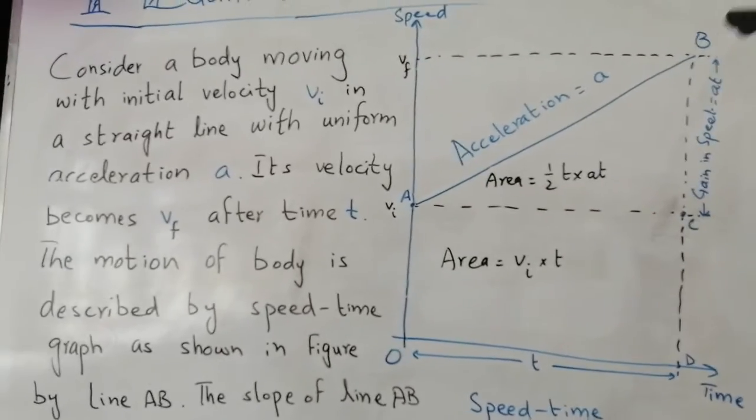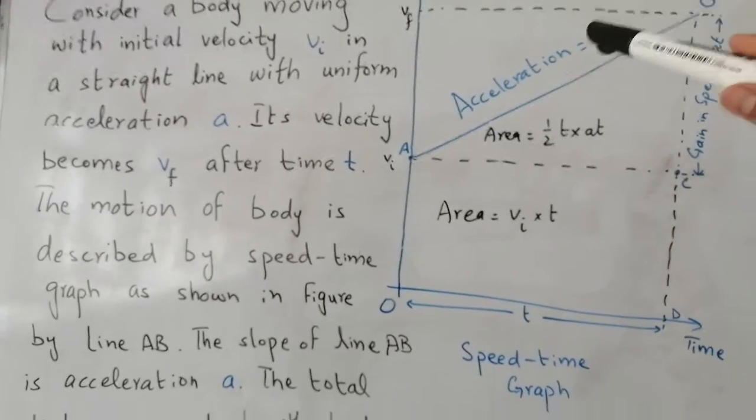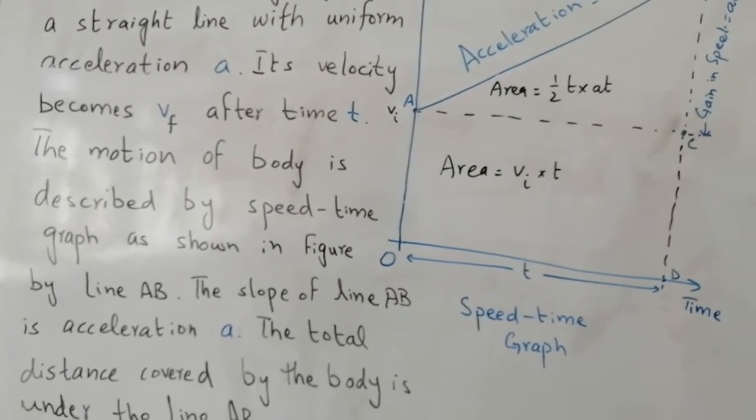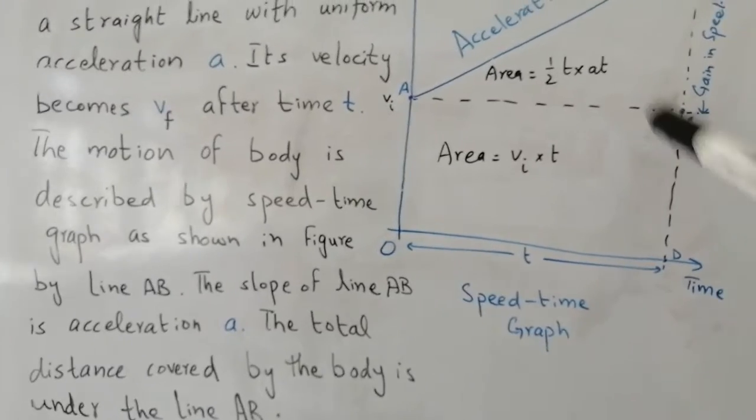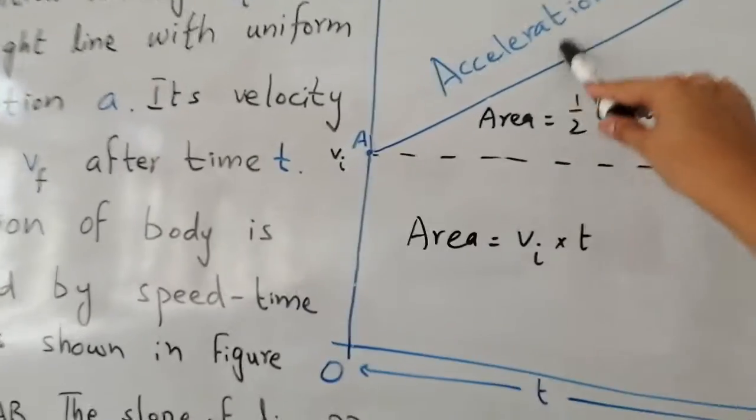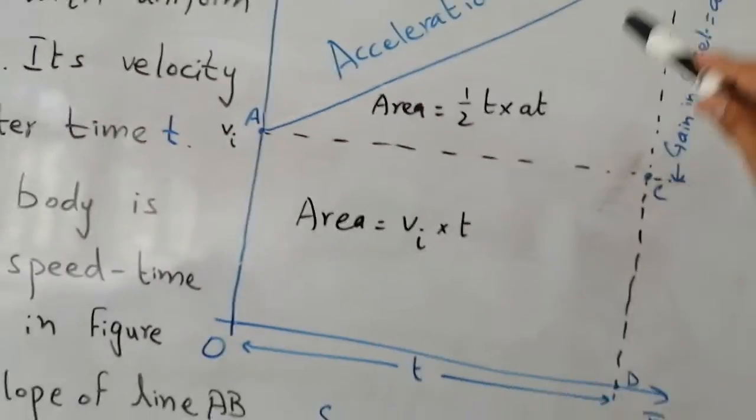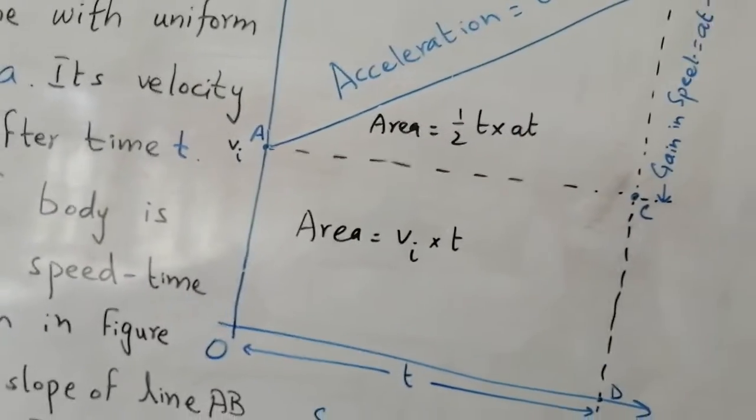The slope of line AB represents acceleration a, and the total distance covered by our body is represented by the area under the slope line. This is your total distance.